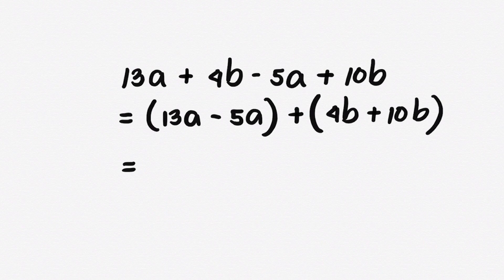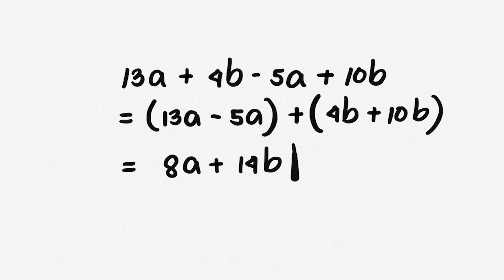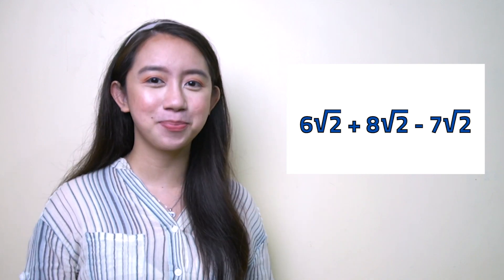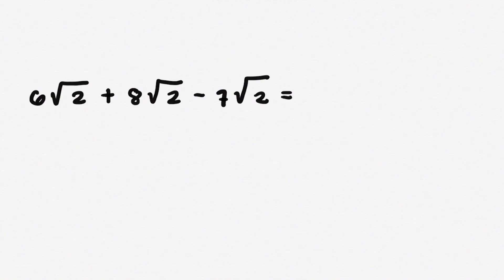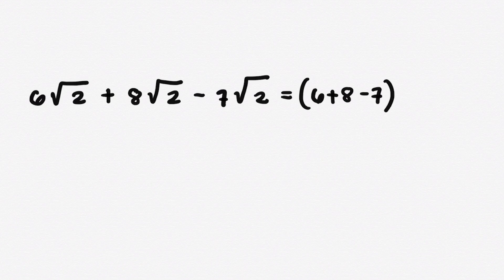Since there are terms that are similar, we can simplify the expression by combining like terms. This rule applies to radical expressions as well. Similar radicals are radicals of the same order and have the same radicand. In combining similar radicals, add or subtract its numerical coefficient and copy the common radical. Since the terms are similar, we can simplify the expression by combining the like terms. Hence, the final answer is 7 square root of 2.